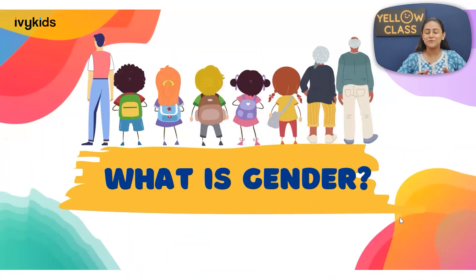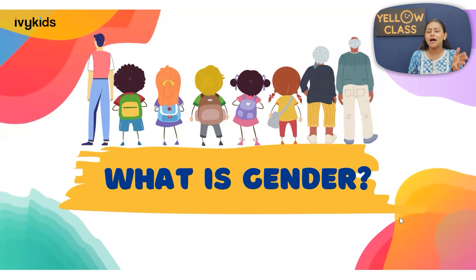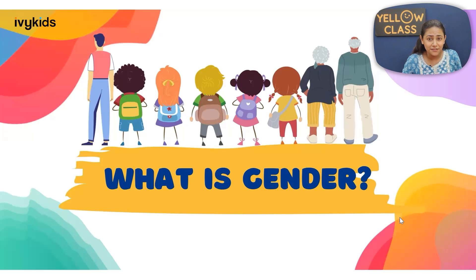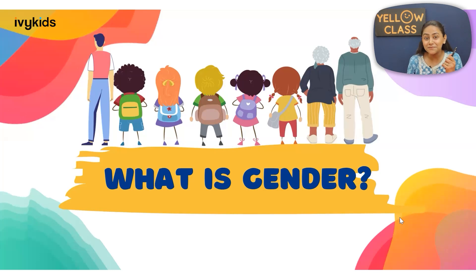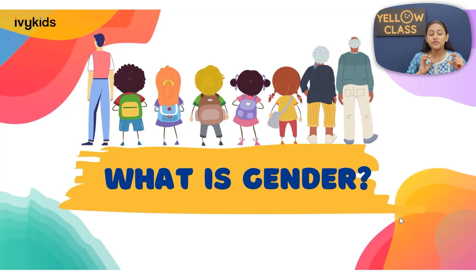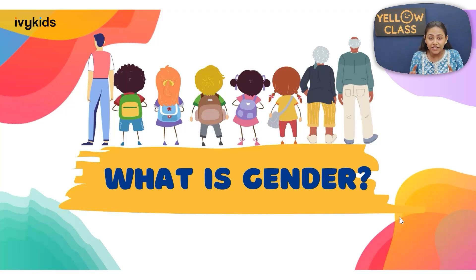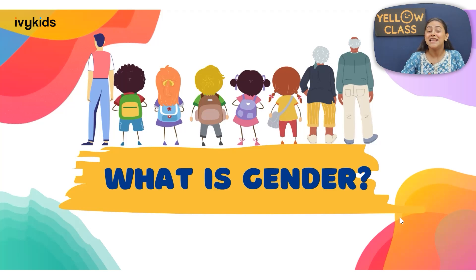Welcome back to the class, everybody. I hope you all enjoyed the activity — it was really fun to separate all the images according to masculine and feminine. Now a question arises: what is gender? You must have seen many people around you, and even animals — they all have gender. When we talk about the term gender, it is a noun that denotes either a male or female. It is said to be a common gender, so gender tells us whether a person or animal is male or female.